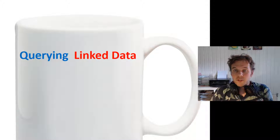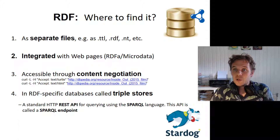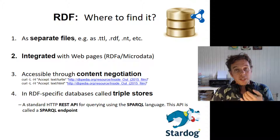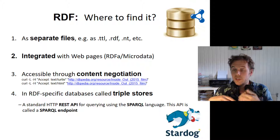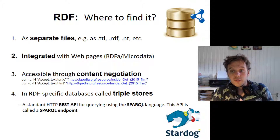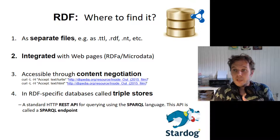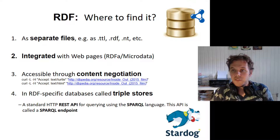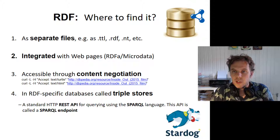So, querying linked data — where is this linked data and how do we actually find it? Typically you can find it as files that are just somewhere on the web that you can download. You can download a turtle file, typically in a .ttl or an RDF file, or there are other formats and other syntaxes.